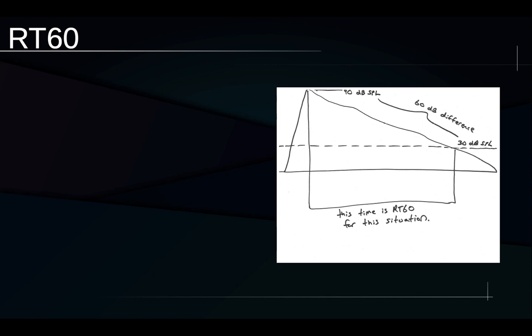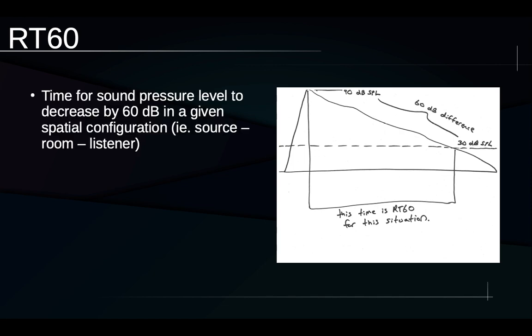So one of the things that we hear in reverberation is how long it takes for the sound, for all those reflections, to decay away. And there's a standard measurement that is sometimes used to describe this situation, and that's called RT60. And it's the time that it takes for the sound pressure level to decrease by 60 decibels in a given spatial configuration of source, room, and listener.